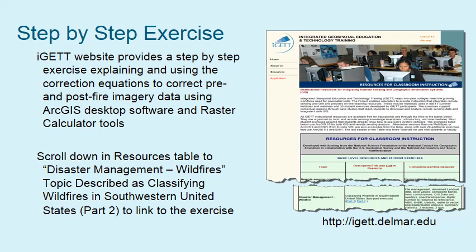That's iget.delmar.edu, which has an exercise that walks you through each of the steps and explains why you're doing them. Go to the web page and scroll down under the topic Disaster Management Wildfires, and you'll see the exercise named Classifying Wildfires in Southwestern United States. The correction process is covered in the second part of that exercise.